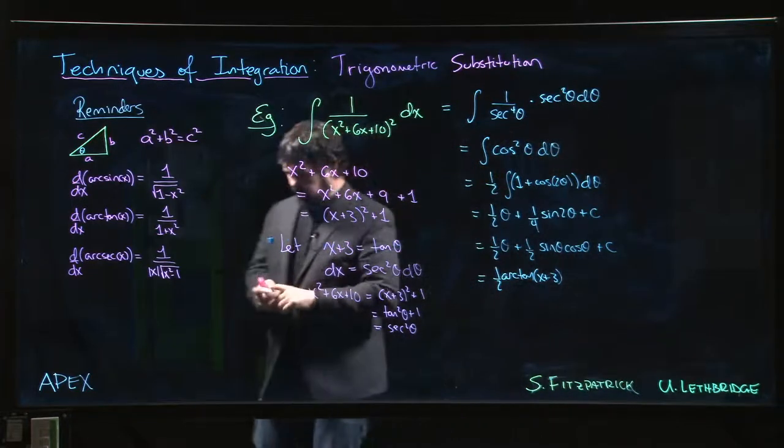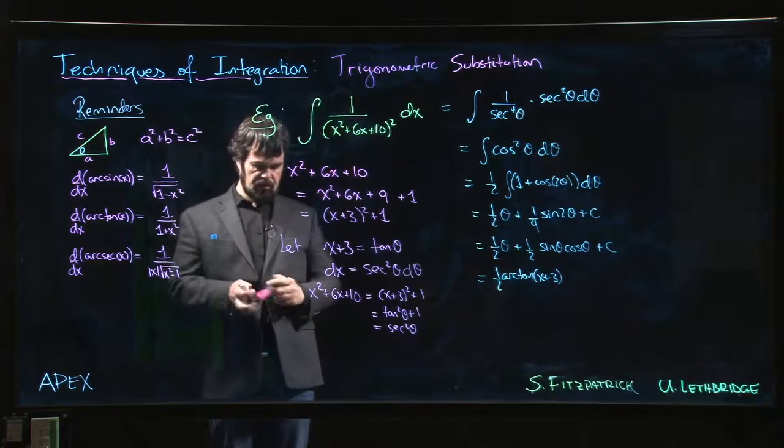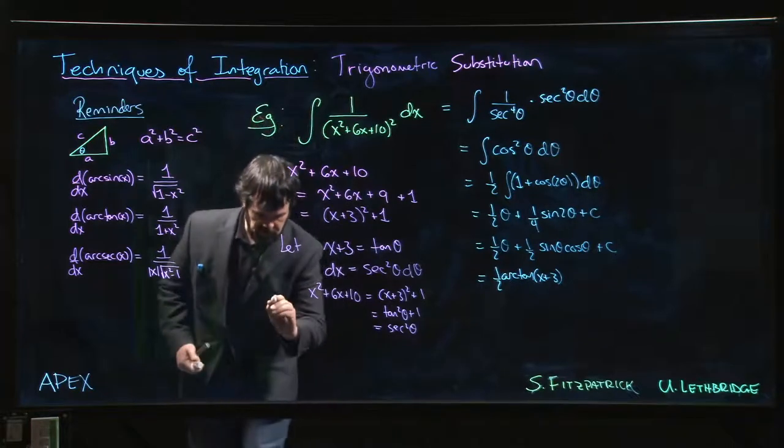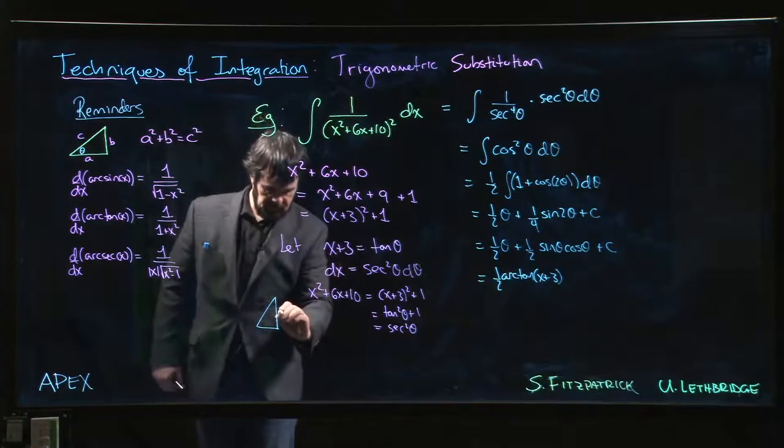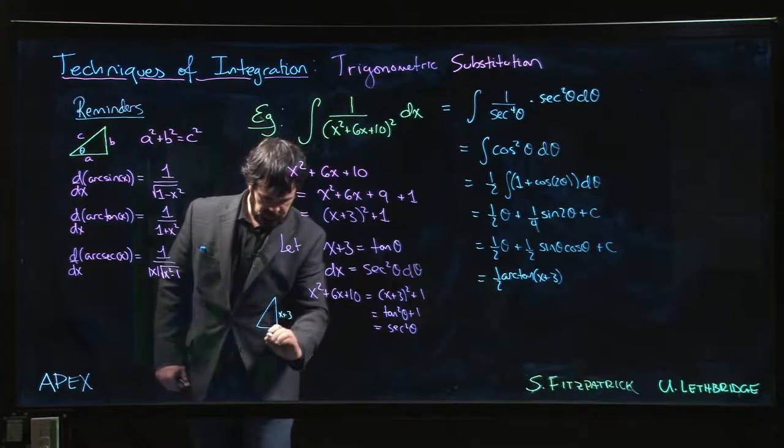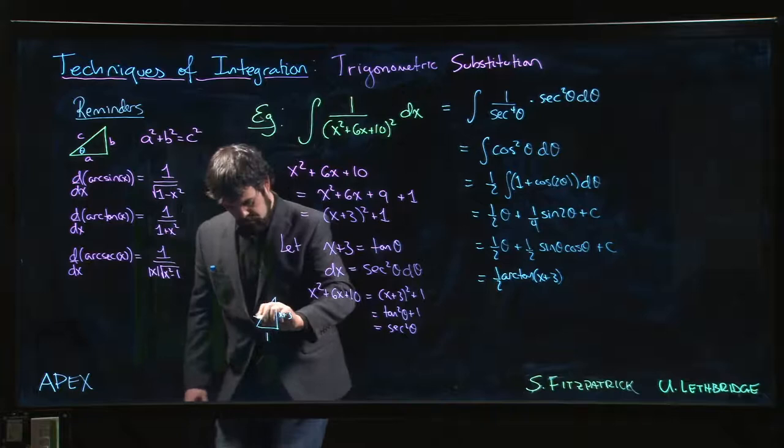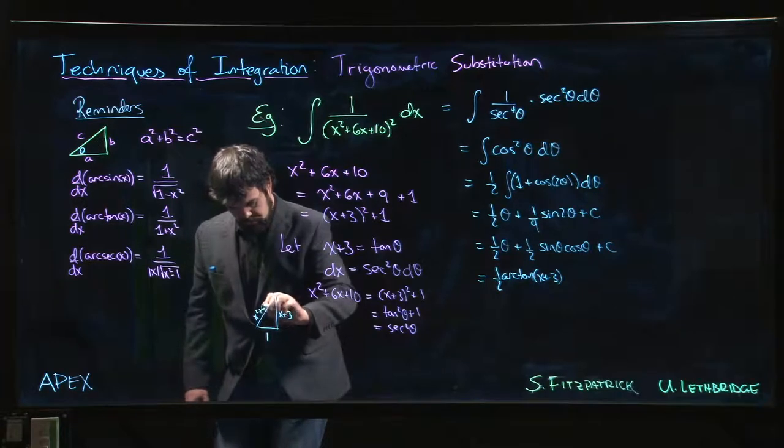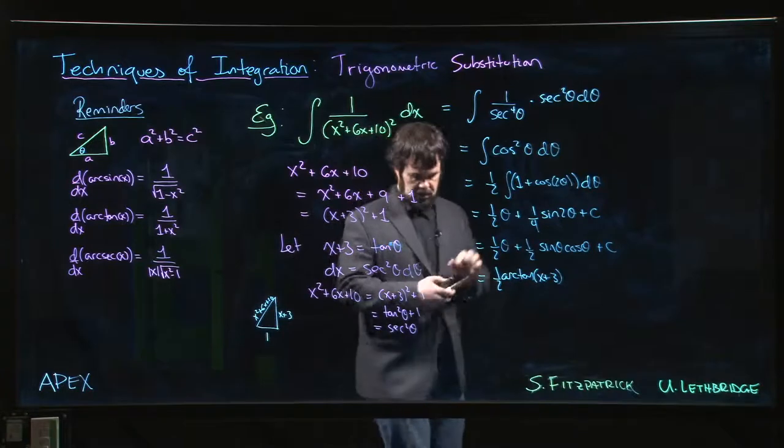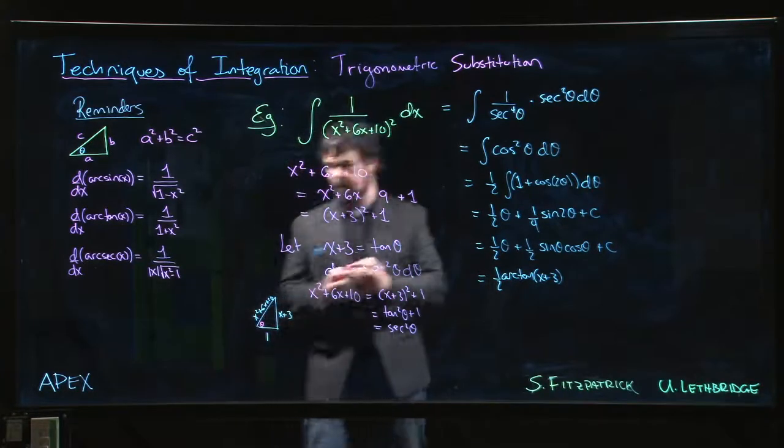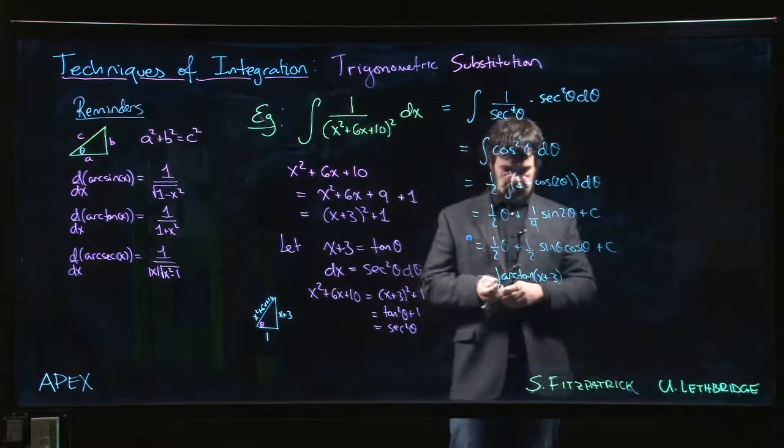So we draw the little triangle, think of tan as x plus 3 opposite over adjacent. This side is the square root of x squared plus 6x plus 10, with that being theta.